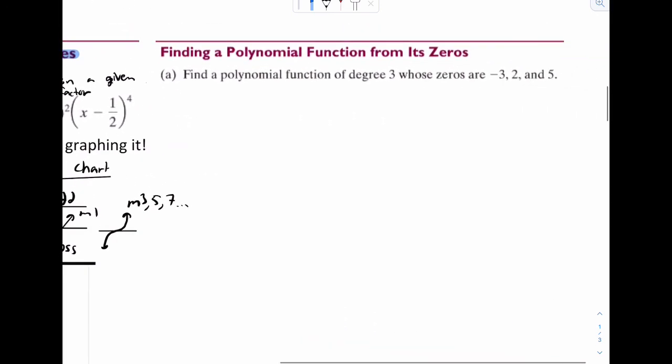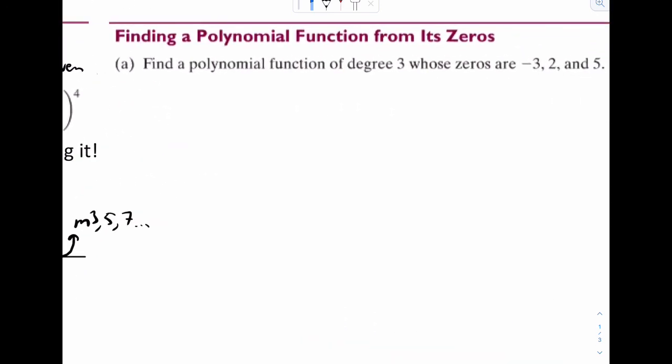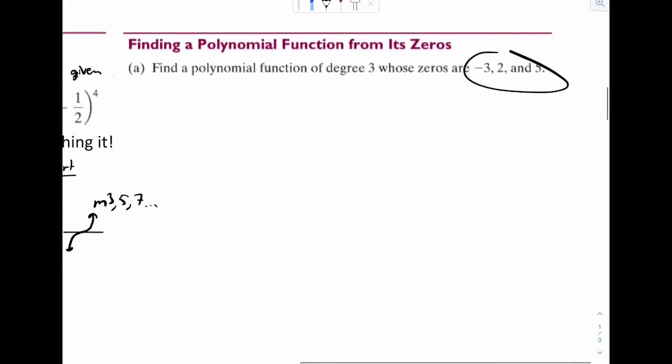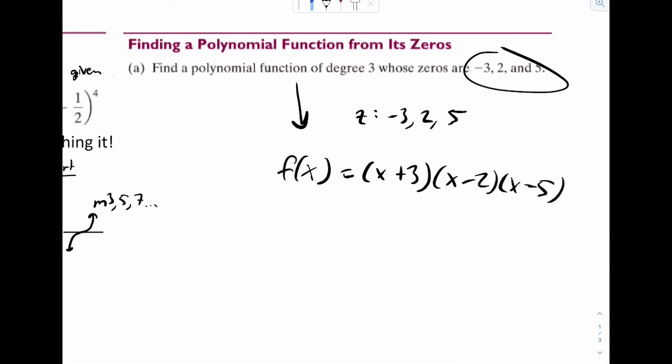Now for the last example, look right here. It says find a polynomial function of degree 3, whose zeros are negative 3, 2, and 5. So first thing is we'll just write a function. And if the zeros are negative 3, 2, and 5, simply work backwards. It must be x plus 3, x minus 2, and x minus 5. And that's it.